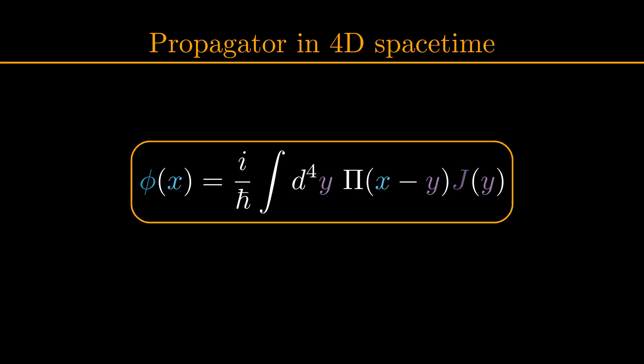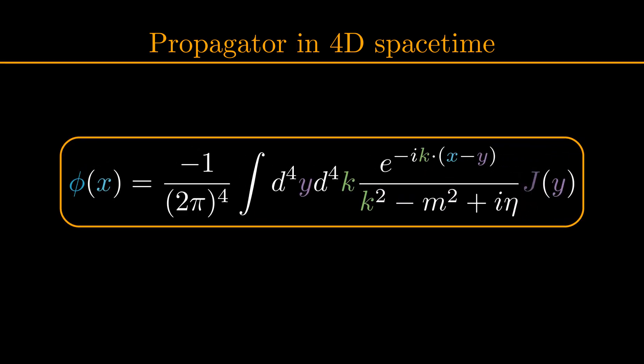We obtain the expression of the field value in 4 dimensional spacetime as an integral over all propagators capital pi of x minus y, multiplied by the source function j of y. We can fill in our expression for the propagator to get the field function as the following integral, from which we can derive our first very nice result.